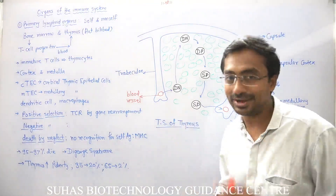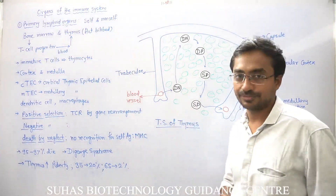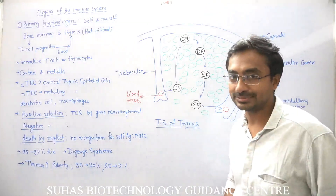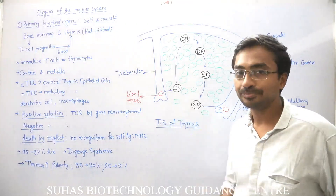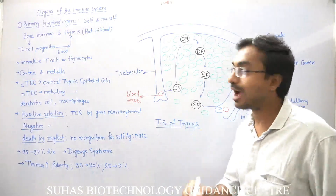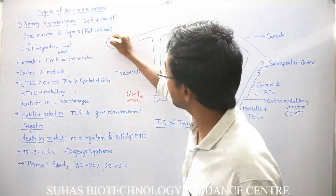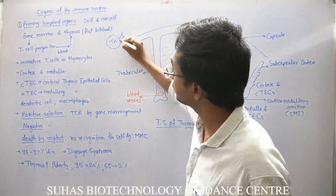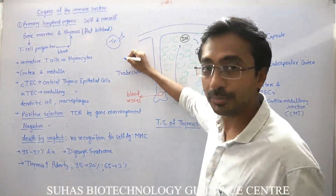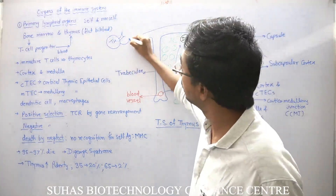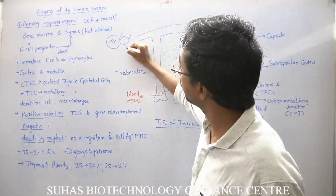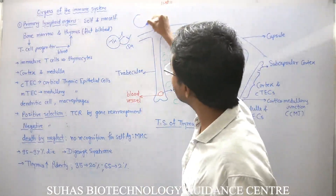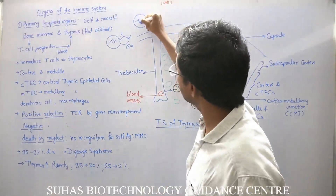It is called double negative because there are two types of T-lymphocytes: T-H, which will have a TCR and also a CD4 receptor, and T-C — that is cytotoxic T-lymphocyte — which will have a TCR and also a CD8 receptor.